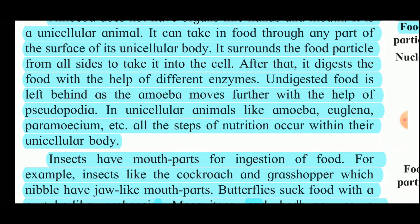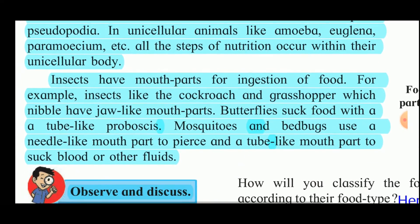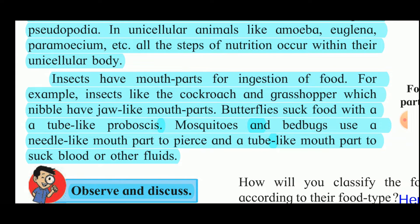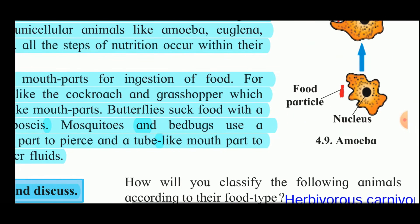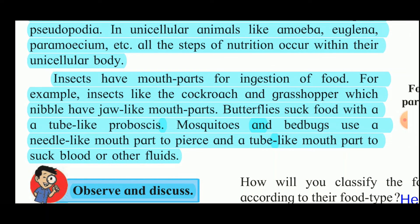In unicellular animals like amoeba, euglena, and paramecium, all the steps of nutrition occur within the single cell — there are no different systems or organs for carrying out these steps. Insects have mouth parts for ingestion. For example, cockroaches and grasshoppers have jaw-like mouth parts for nibbling. Butterflies suck food with the help of a tube-like proboscis. Mosquitoes and bedbugs use a needle-like mouth part to pierce and a tube-like mouth part to suck blood or other fluids.